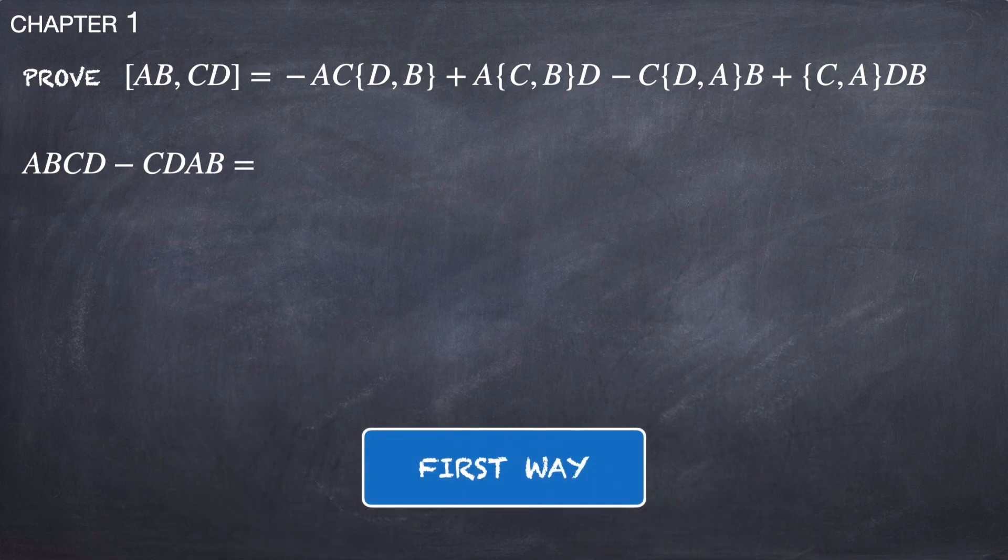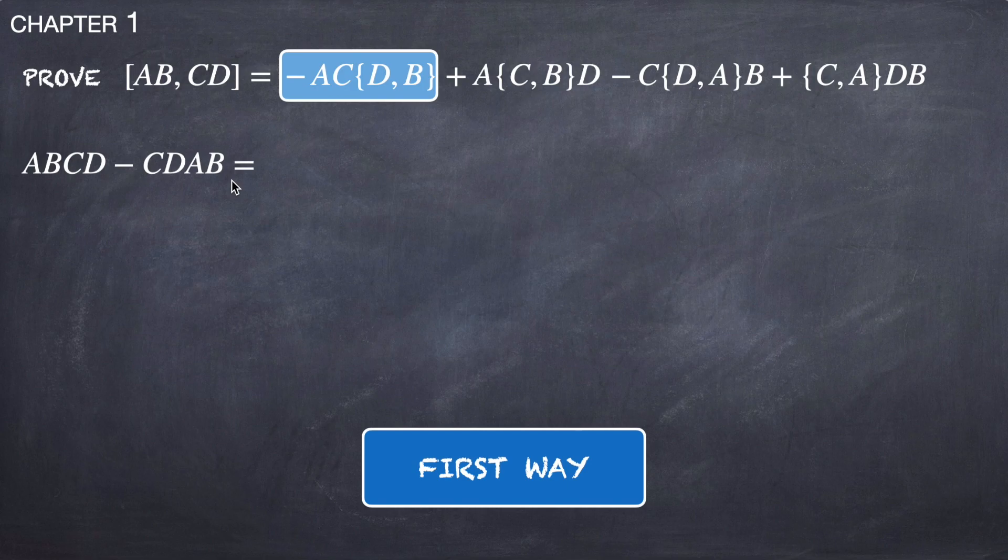In the first way, we will write explicitly the anti-commutators on the right hand side of this equation.